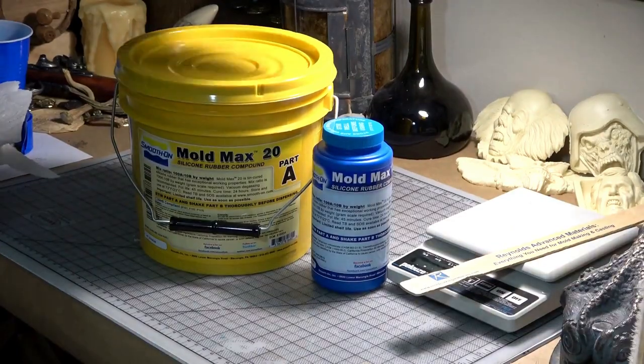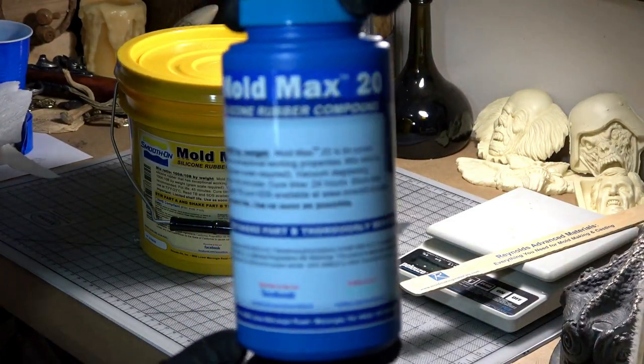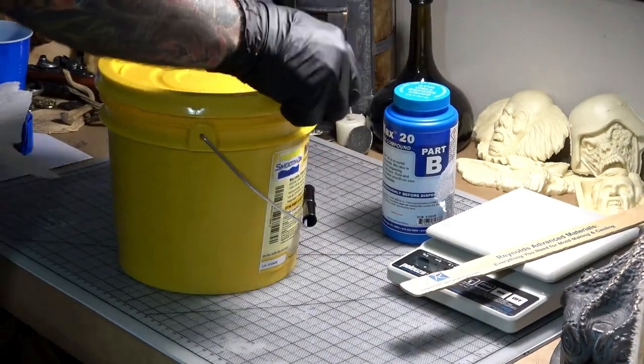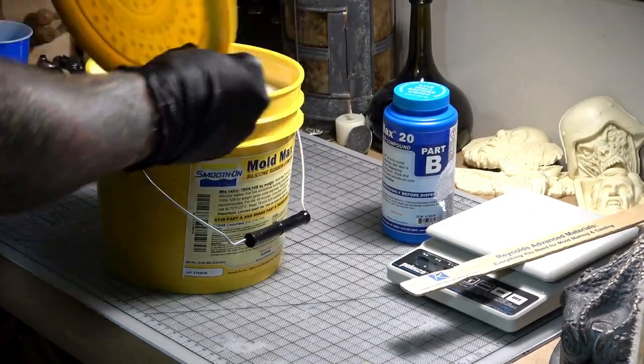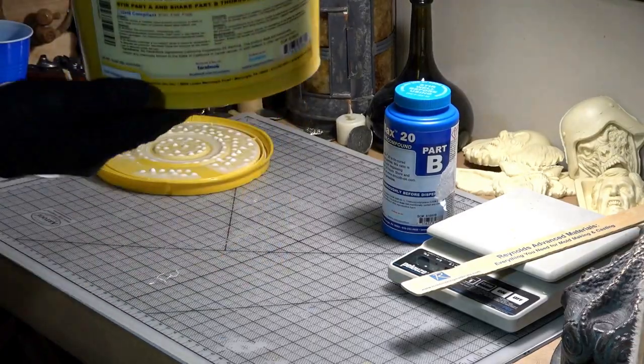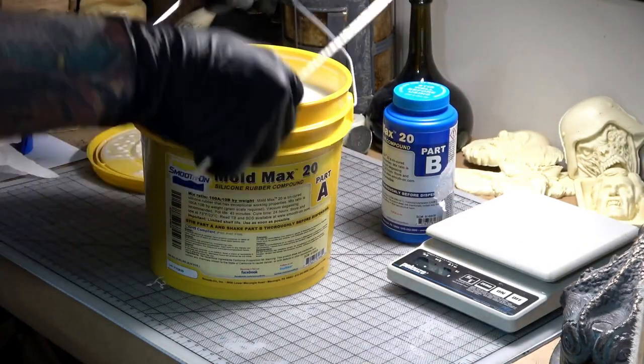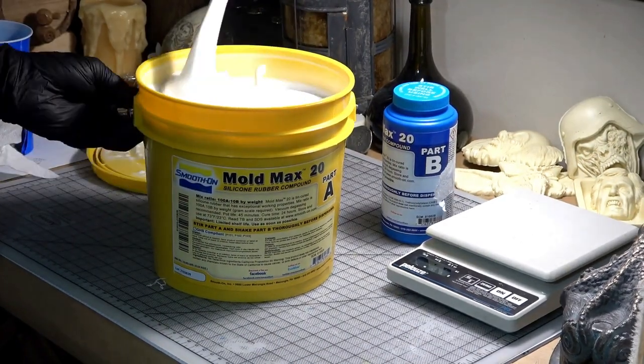For these molds, I'm going to use Smooth-On's Mold Max 20, which is a tin-based silicone. You always want to shake up part B and stir up part A really well before using. This silicone has a pot life of 45 minutes and a cure time of 24 hours.